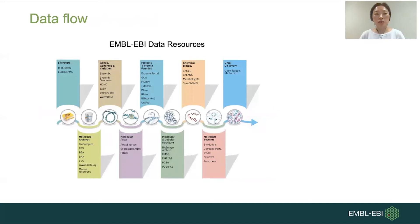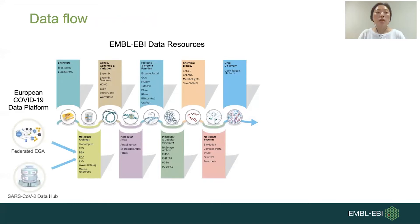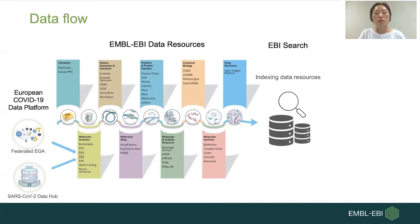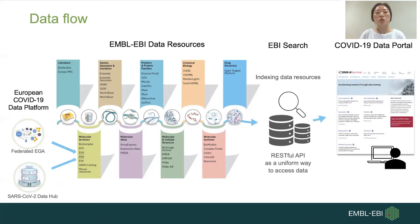Now I'm going to explain how the data comes to the portal. EMBL-EBI hosts a vast amount of molecular data and other information such as literature, genes, genomes and variation, proteins and protein families, chemical biology, drug discovery, molecular archives, molecular atlas, molecular and cellular structure, and molecular systems. The data collected through the European COVID-19 data platform are available through EMBL-EBI data resources. The EBI search indexes those data resources and maintains data indices up to date. The search engine provides REST web services which can be used as a uniform way to access those data resources. The API is integrated into the COVID-19 data portal so users can always see up-to-date data and perform searching.